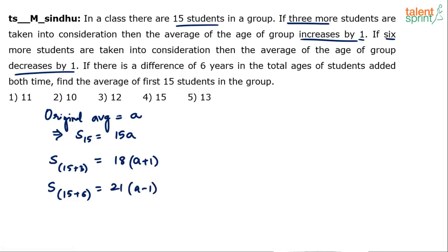To recap: the original sum of 15 students is 15a. When 3 more students are added, the average increases by 1, giving 18 students with average a plus 1. If 6 more students are added, the total is 21 students with average a minus 1, so that sum is 21 times (a minus 1).